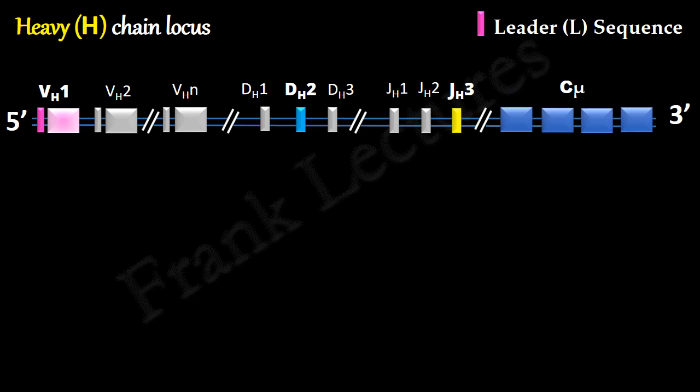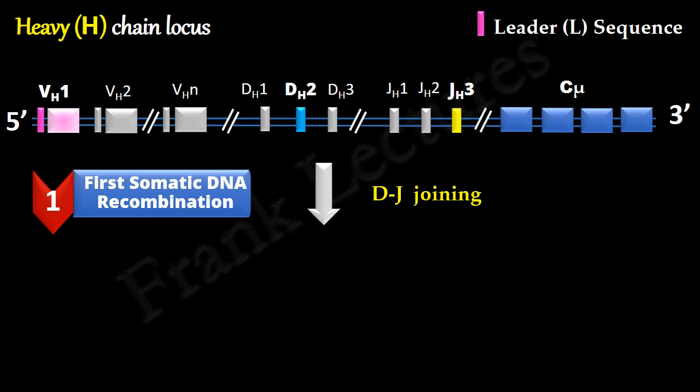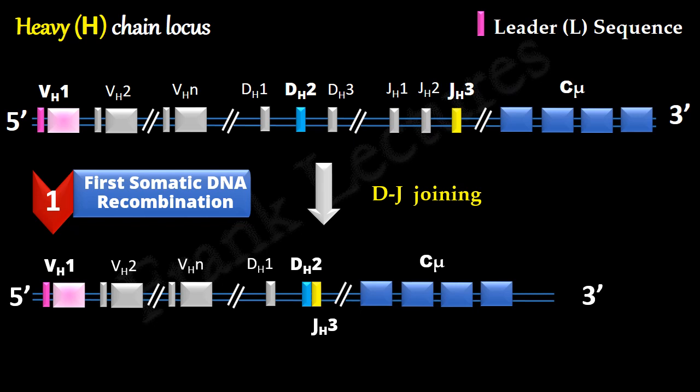In the first step, a randomly selected D gene segment is joined to a J gene segment. This is the first gene rearrangement event. Let's say, second D gene segment is joined to the third J gene segment. As a result of this gene rearrangement, we get D-J joined rearranged DNA.